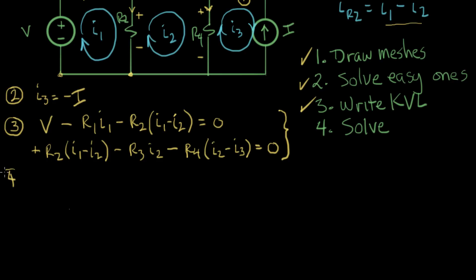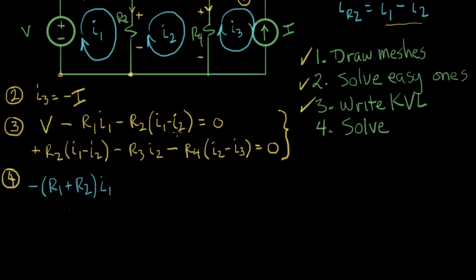Now we begin step four, which is to solve the equations. First I want to tidy up a little bit. I'm going to take the constants and put them on the right-hand side, and gather together the terms for I1 and the terms for I2 in separate places. Looking at the first equation, I1 is mentioned twice, so we get minus R1 plus R2 times I1. I2 shows up once, so it's plus R2 times I2. Moving V to the other side, it becomes minus V. That's our first equation.